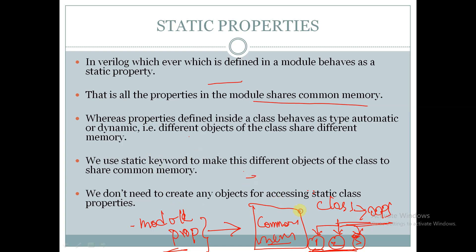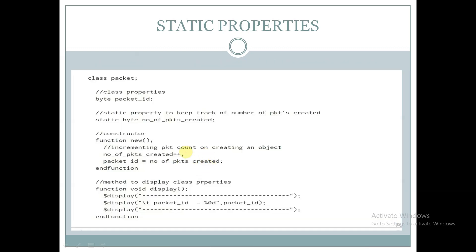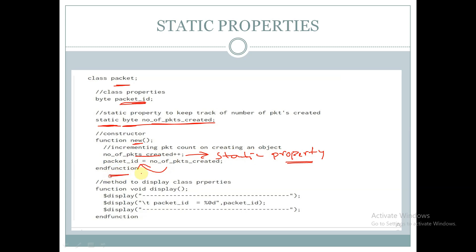So in order to make a class behave like a module, we will use the static keyword so that different objects of the class share common memory. Consider a class called 'packet' — it has a property called 'packet_id', and we declare a variable called 'number_of_packets_created' of byte type, declared as static. We create a function 'new' where we increment 'number_of_packets_created', assign it to 'packet_id', and in the display function we display 'packet_id'.